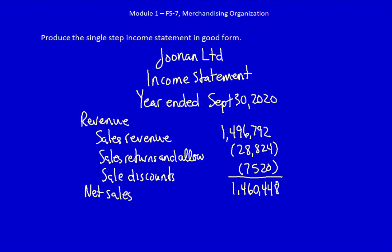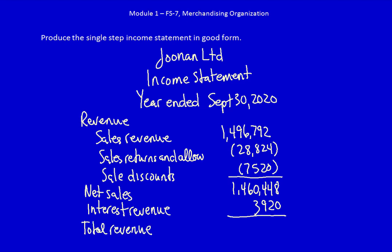In a single step income statement I always combine all the revenues together, so at this point I have to add in the last revenue account, interest revenue, which was $3,920. In a single step income statement I always have a total revenue line, and the total revenue in this case is $1,464,368. The only time I don't need a total revenue line is if revenue was just one line item. All right, we've got the total revenue — let's move on.